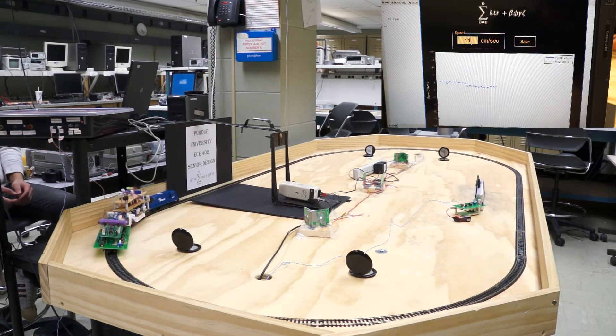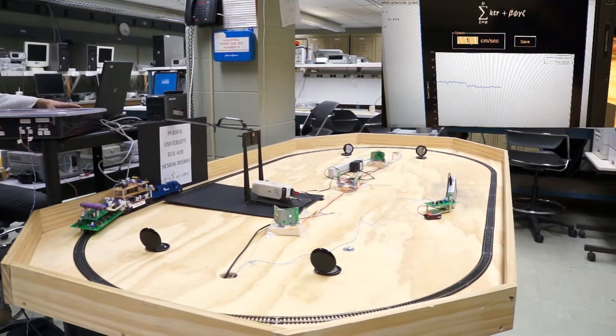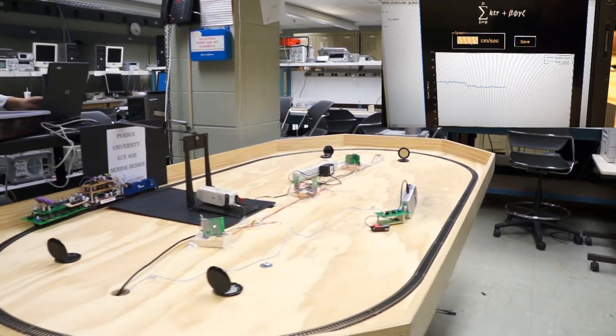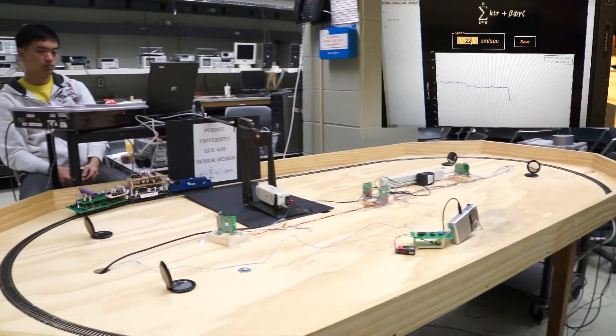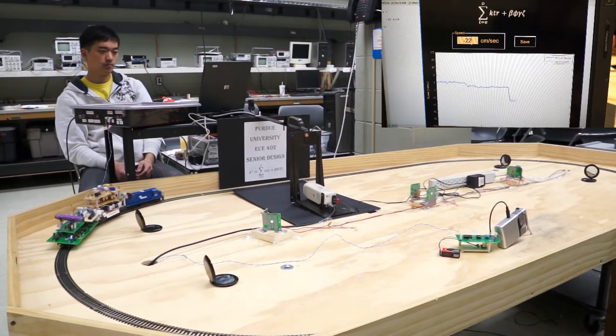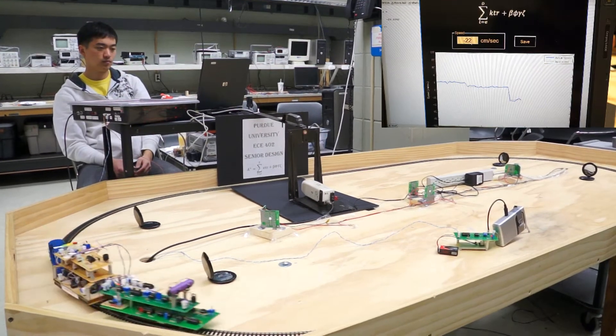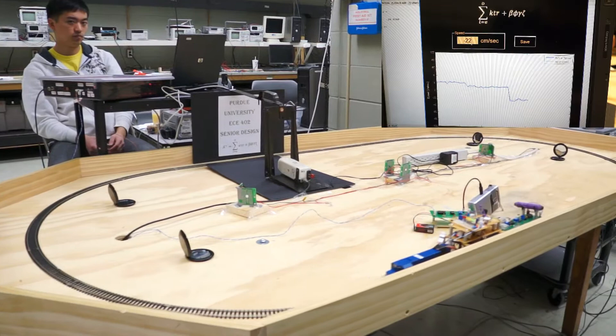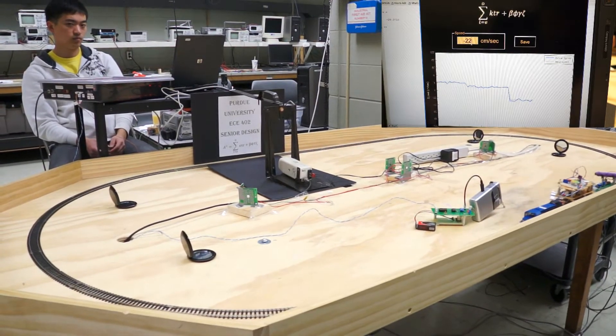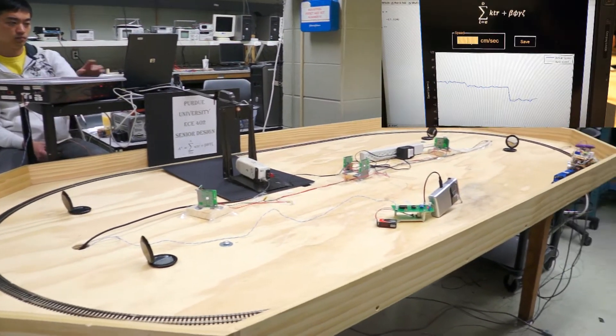The train outputs an audible feedback for changing direction. Set the train to full reverse speed. The train also displays the input speed on a LED array. Set the train to full forward direction.